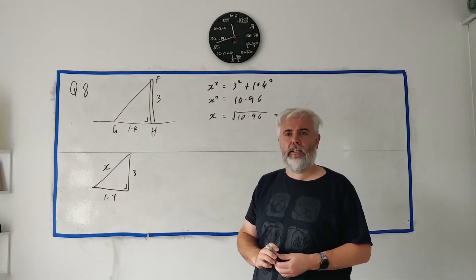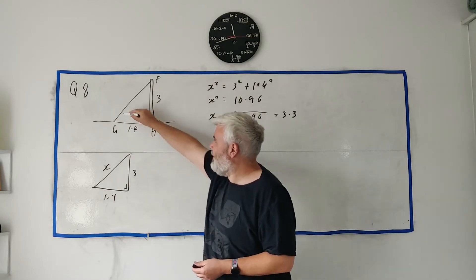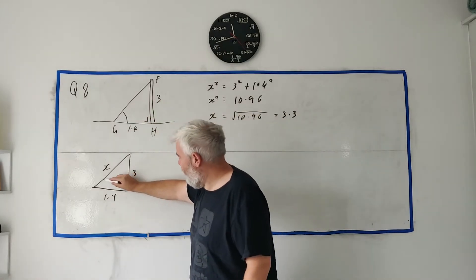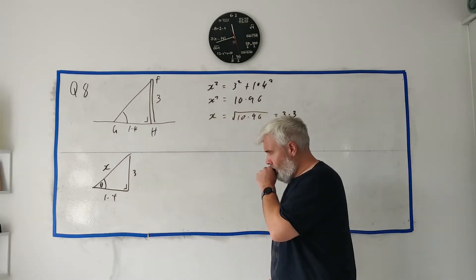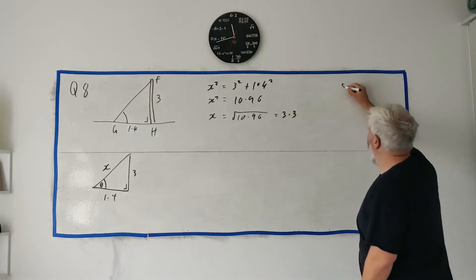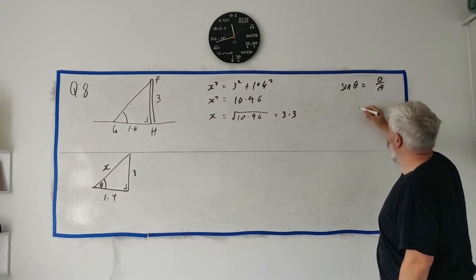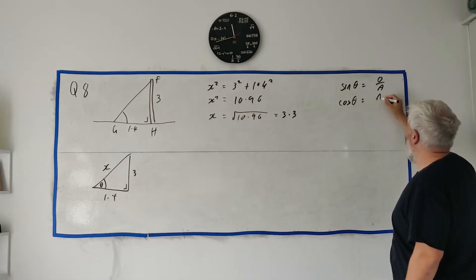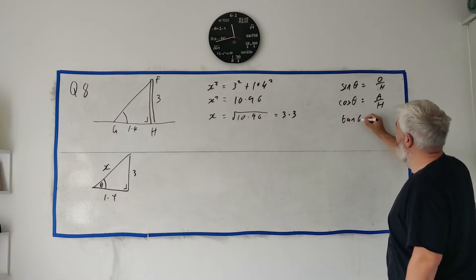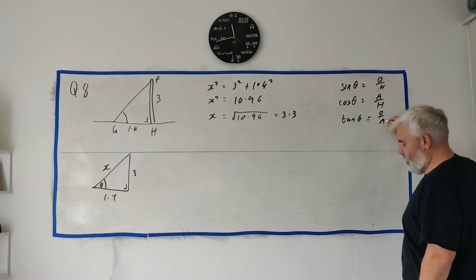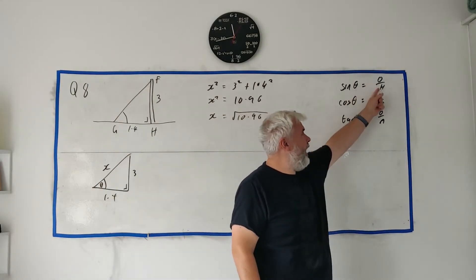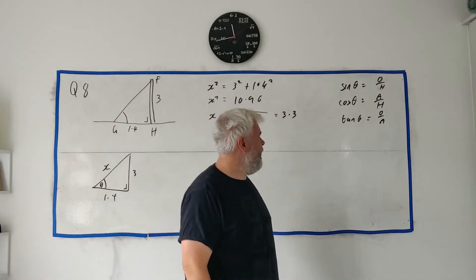In part two they want you to show that the angle FGH is 65 degrees to the nearest degree. Forget this drawing - let's draw a simpler one. The angle theta is inside the triangle, and when dealing with right-angle triangles you should think of three things: sine, cosine, and tangent. Sine theta equals opposite over hypotenuse, cosine theta equals adjacent over hypotenuse, and tangent equals opposite over adjacent.